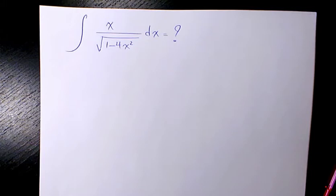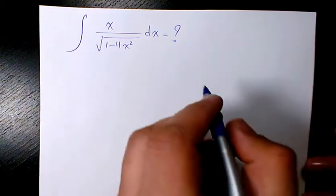In this video I want to show you how to integrate x divided by square root of 1 minus 4x square. I'm going to use substitution method in this example.